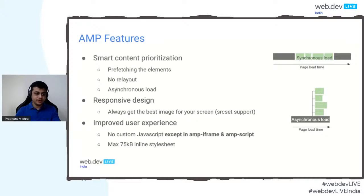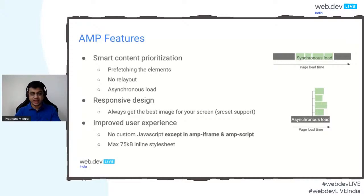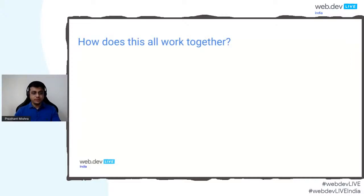AMP uses responsive design, and you can use responsive images that support source set, so on a lower resolution screen you can download lighter images. The user experience of AMP is good — no external JavaScript is allowed unless you are using components like amp-iframe and amp-script, which come with their own restrictions to ensure pages perform well. There is also a stylesheet limitation — it used to be 50 KB, now it is 75 KB — which is more than sufficient for most implementations.